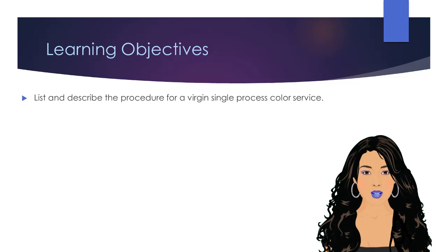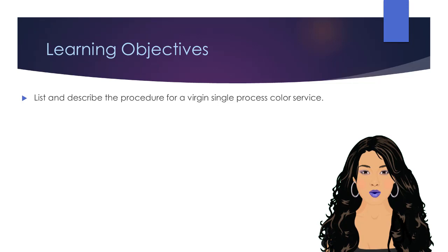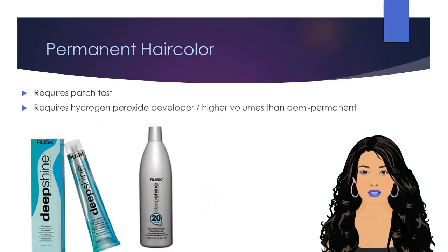Our learning objective for this lesson will be to list and describe the procedure for a virgin single process color service.